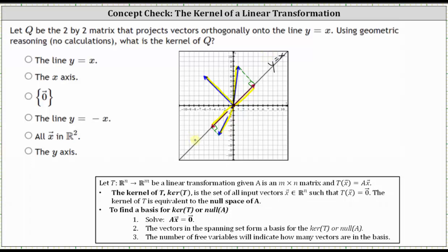So for example, all of these vectors, if projected orthogonally onto the line y equals x, the result would be the zero vector. Notice how if we move all these vectors into standard position — meaning the initial point at the origin — all the vectors would fall on the line passing through the origin with a slope of negative one, this line here.